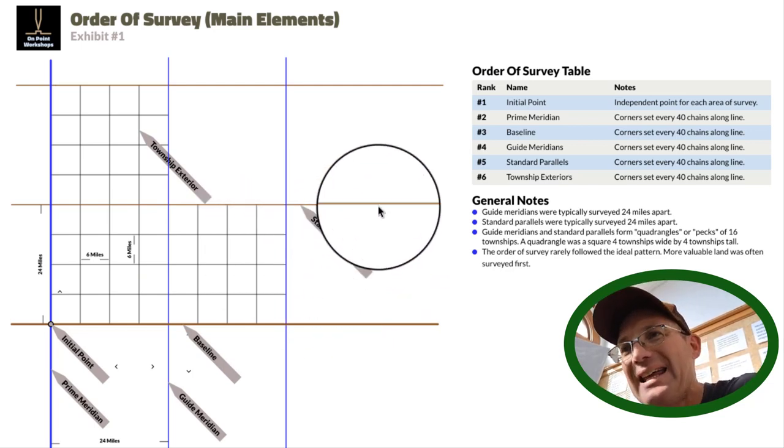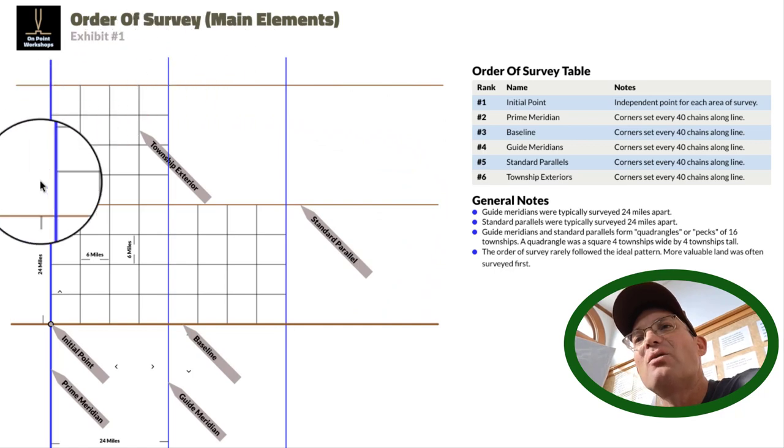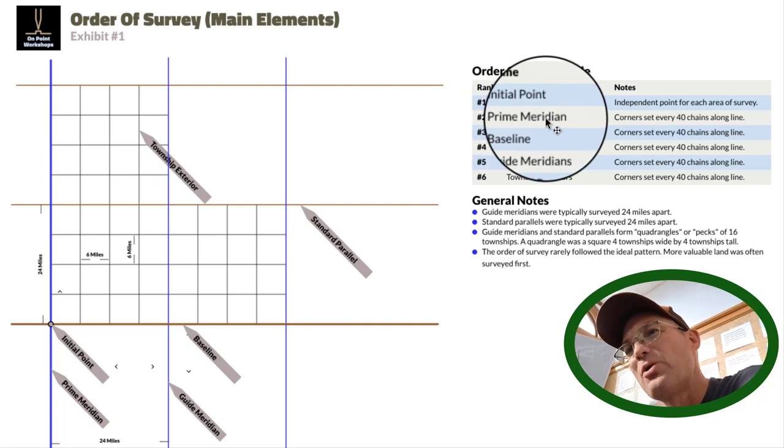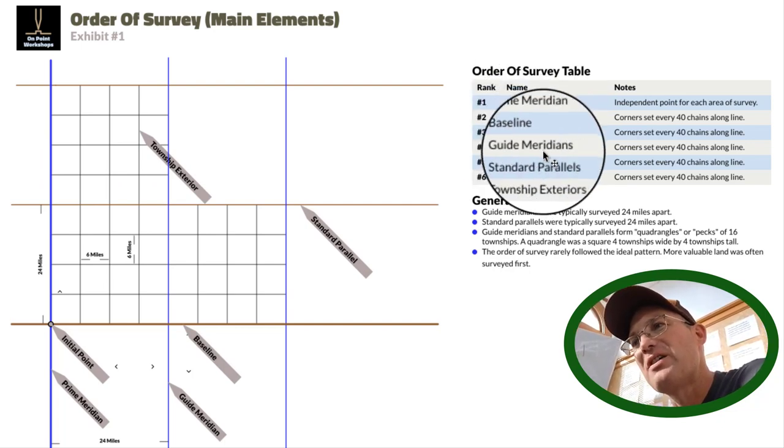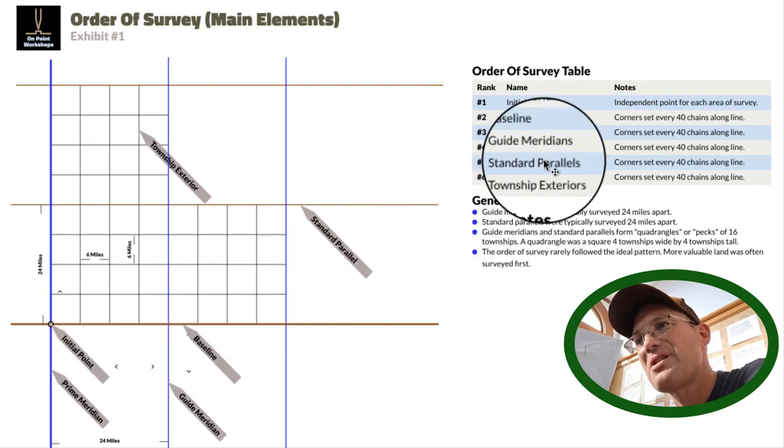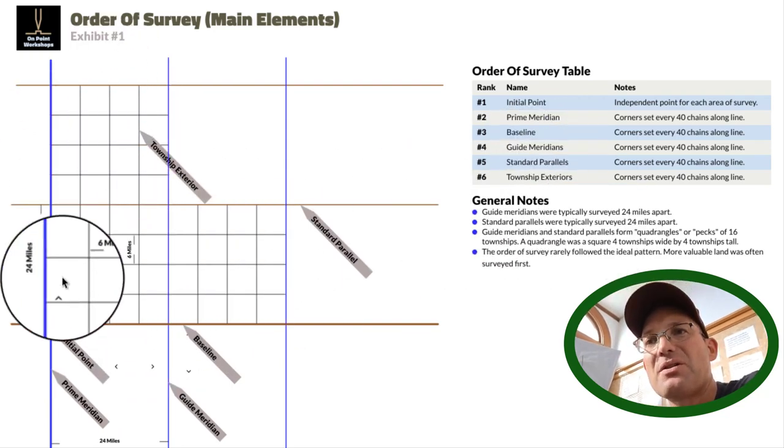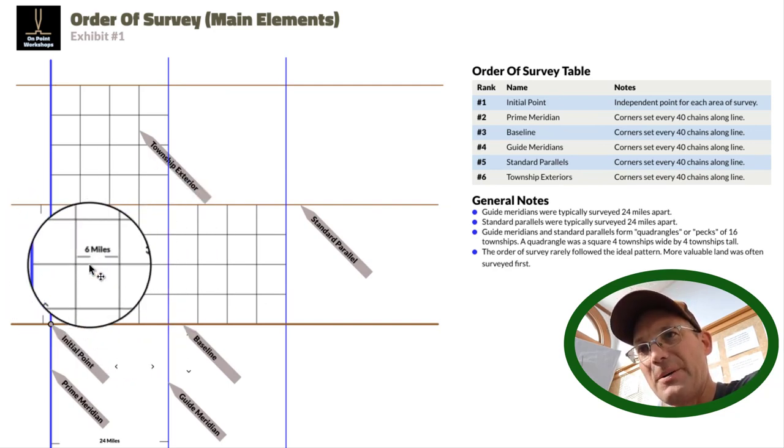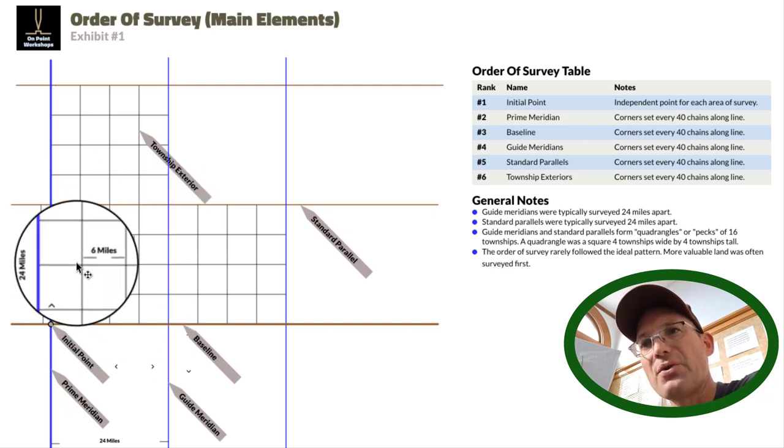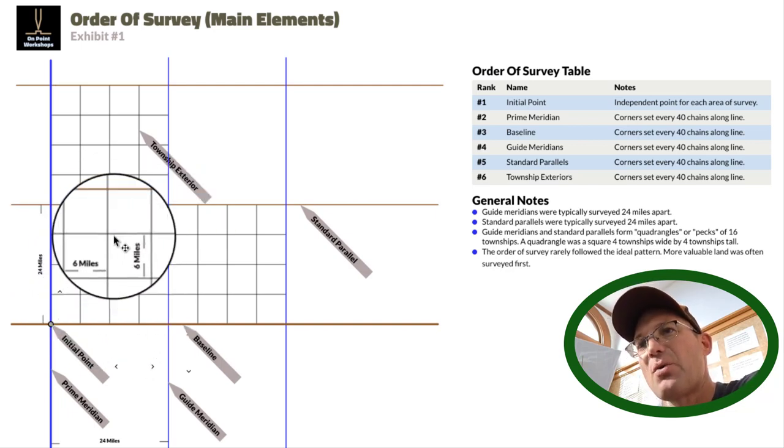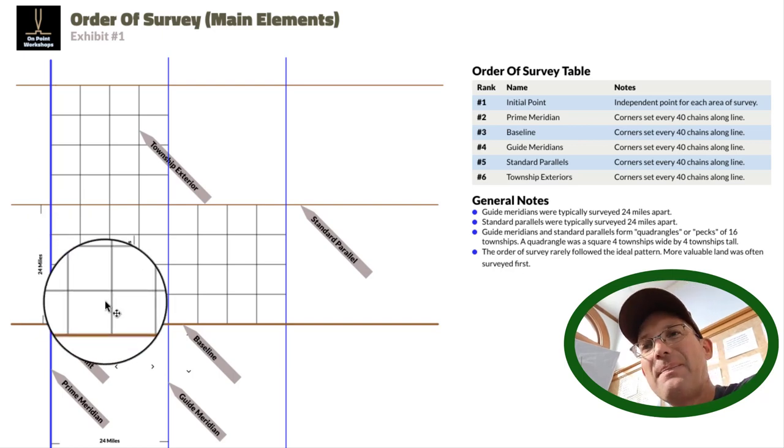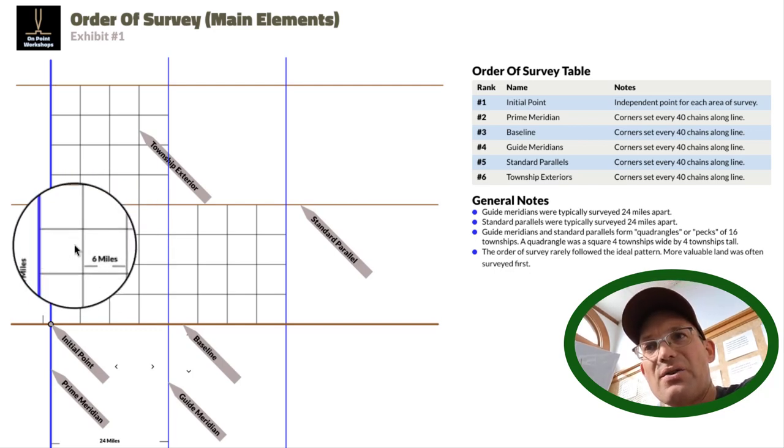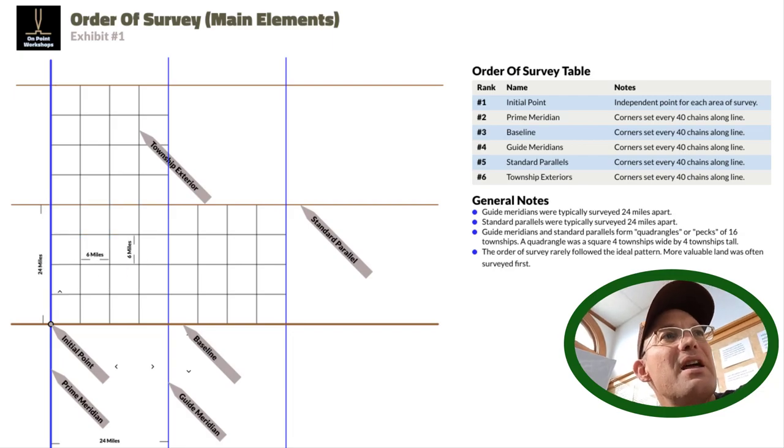That is the order of survey and the elements to get down to the townships. We start with the initial point, then the prime meridian, then the baseline, then the guide meridians every 24 miles, standard parallels every 24 miles, and then finally the township exteriors. Those divide the larger squares, which are called quadrangles, into 6 mile by 6 mile squares called townships. Then they divide these townships into 1 mile by 1 mile squares, so 36 squares in a township, which we will cover in the next video. Thank you.